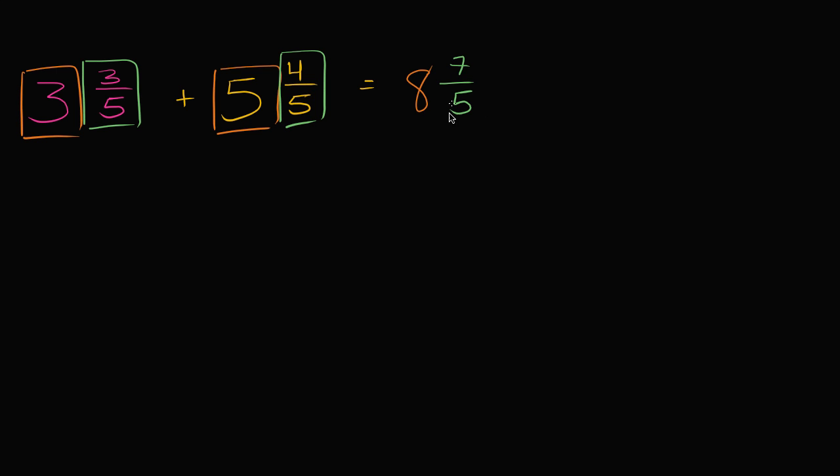So to get a better sense of what number is really being represented here, I want to rewrite this. Eight and seven-fifths is the same thing as eight plus, instead of seven-fifths, we could say this is the same thing as five-fifths, which is a whole, plus two-fifths.